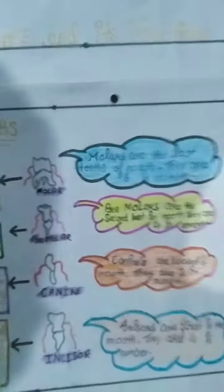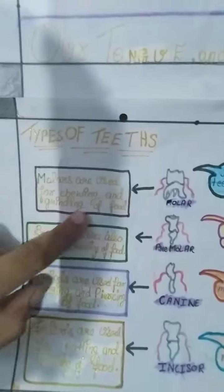They are six in number. Molars are used for chewing and grinding of food. So, this was how our tongue and our teeth function. Thank you.